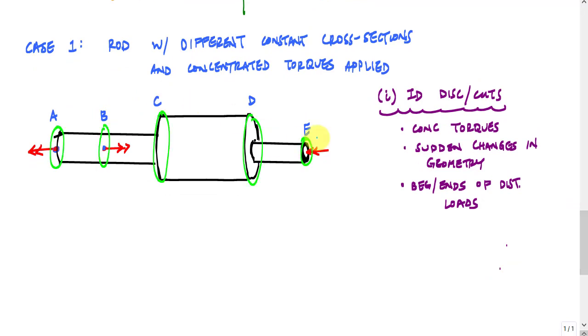I'll circle them. And what I want to do is cut between discontinuities. So here I'm going to definitely make a cut here. And that cut indicates that between A and B, that segment has the same internal torque wherever I cut. And same with B, C, C, D, and D, E. And I'll call these cut one, cut two, three, and four.